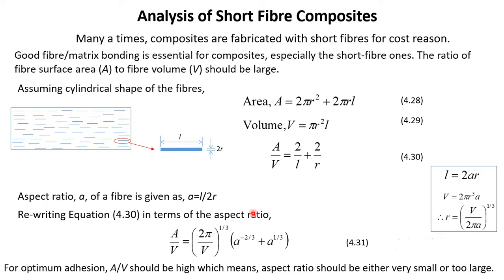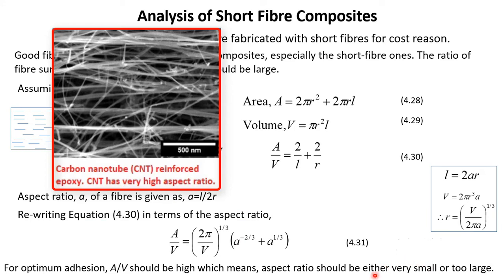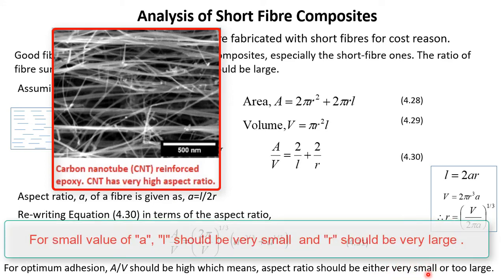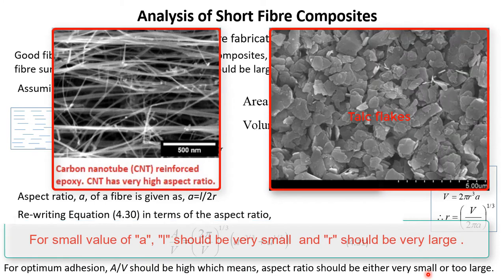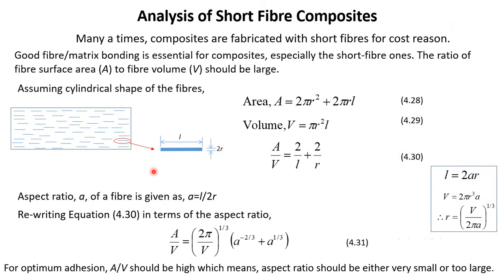A large aspect ratio means L over 2r is large, so the fiber length L should be large. For very small aspect ratio, the fiber behaves like a flake — a flat surface with smaller aspect ratio — which also gives large A/V. Therefore, to get very good short fiber composites we should have either fibers with very high aspect ratio or flake-like fillers such as graphene flakes or talc, which also come in flat flake forms.